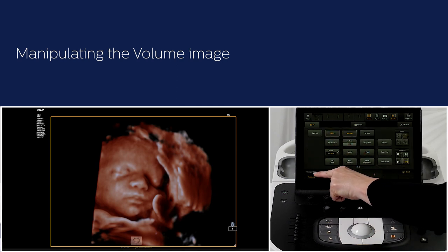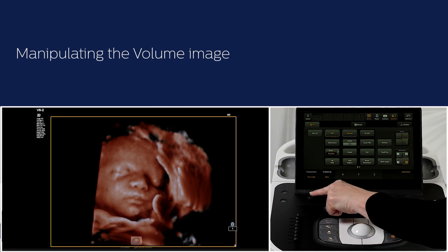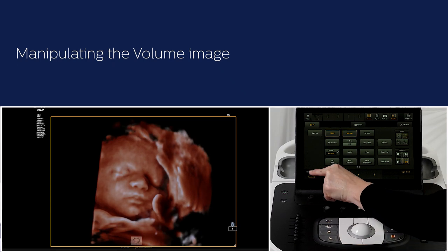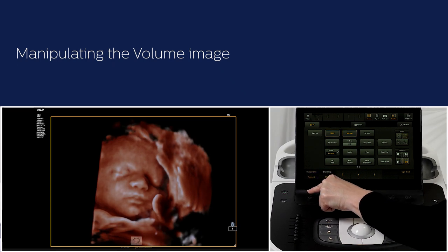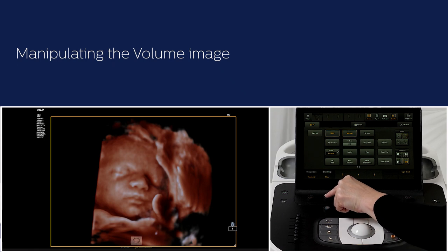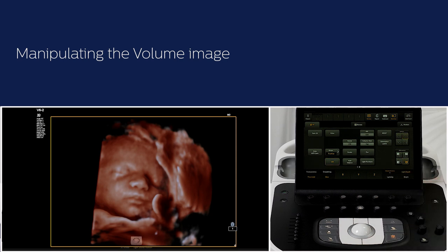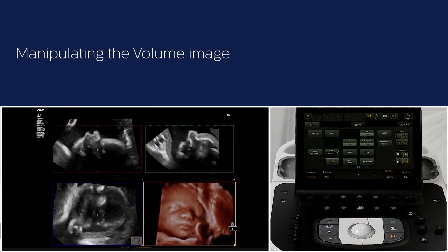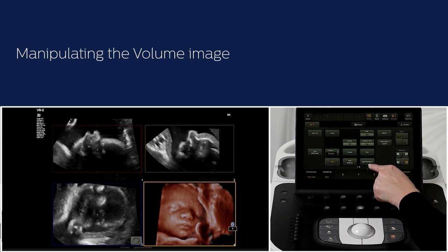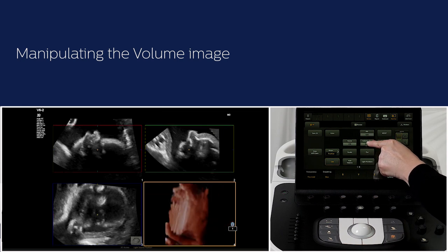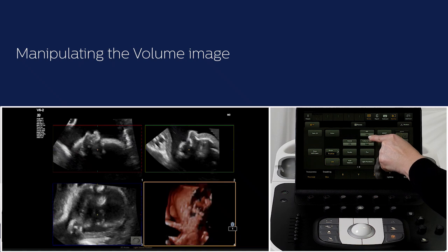The threshold, transparency and smoothing can be used to optimize the volume image. Select these on the touch screen or press on the rotary knob to select and turn the knob to adjust. On the second page of the touch screen, volume chroma, lighting and bright is available if further optimization is needed. Let's go back to a 4-up layout. The dotted line or volume view can be changed depending on which direction you want to view the data set. On the second page of the touch screen, press volume view. Notice how the dotted line changes position in the ROI boxes.